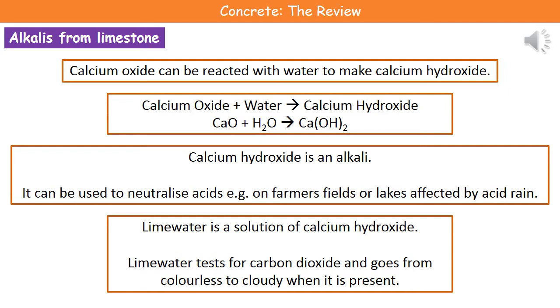Calcium hydroxide is an alkali, which means we can use it to neutralize acids. For example, if we've got fields or lakes affected by acidic conditions — whether that's down to acid rain or other things — we can spread calcium hydroxide across them to neutralize the acids.